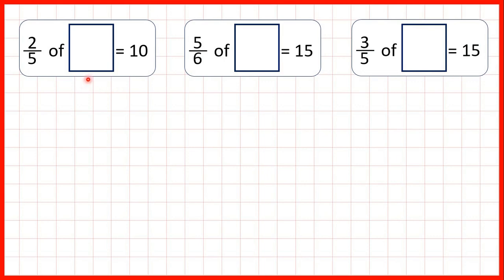Here we've got some missing number problems for finding a fraction of a number. Normally to find a fraction of a number we divide by the denominator and multiply by the numerator. But here, because we know our answer but don't know the total quantity, we've got a missing number problem, so we need to do the opposite — use the inverse. We need to divide by the numerator and then multiply by the denominator.